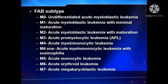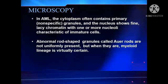The French American British classification has eight subtypes from M0 to M7. M0 is undifferentiated acute myeloblastic leukemia; M1 is acute myeloblastic leukemia with minimal maturation; M2 is acute myeloblastic leukemia with maturation; M3 is acute promyelocytic leukemia; M4 is acute myelomonocytic leukemia; M4 EOS is acute myelomonocytic leukemia with eosinophils; M5 is acute monocytic leukemia; M6 is acute erythroid leukemia; M7 is acute megakaryoblastic leukemia.